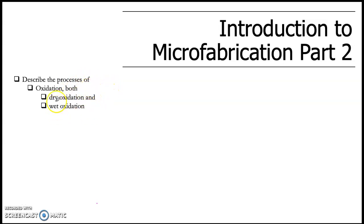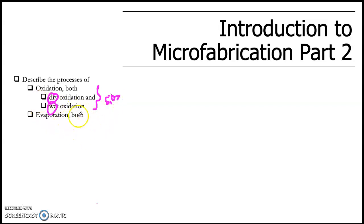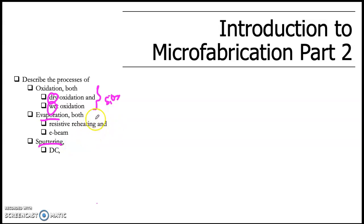There are two types of oxidation: the first is dry oxidation and the second is wet oxidation — both used to produce silicon oxide. The second main process is evaporation, which is an additive process. In the additive process we have evaporation and also sputtering, and we're going to deposit metal using these methods. The simplest one is evaporation.